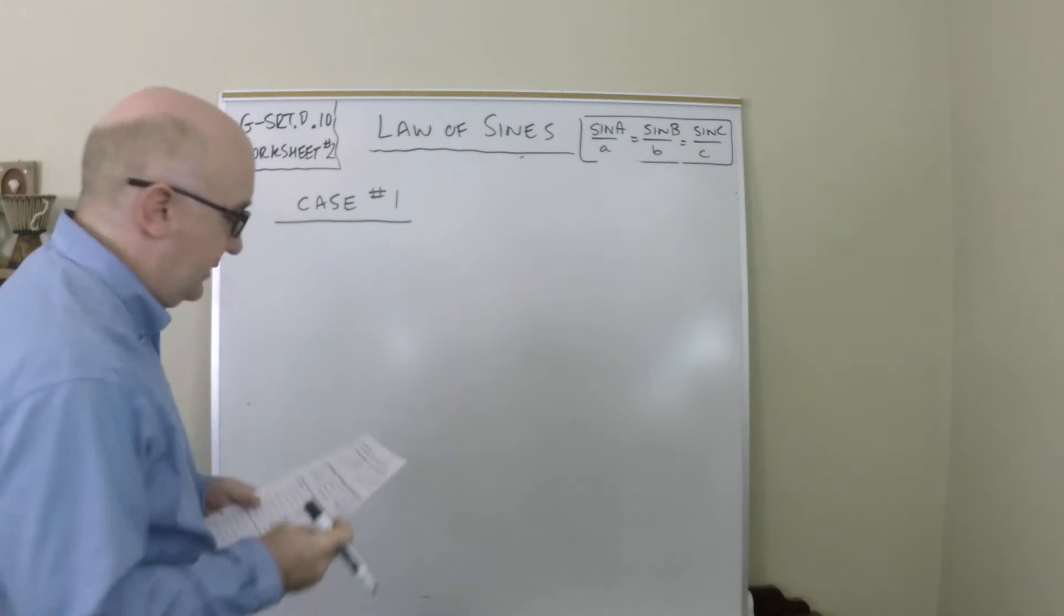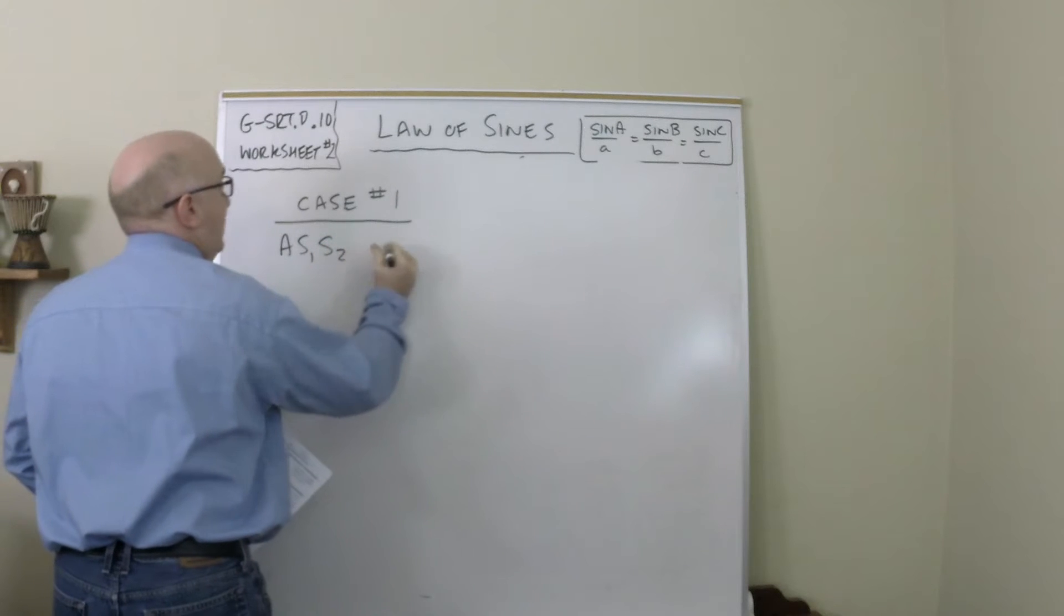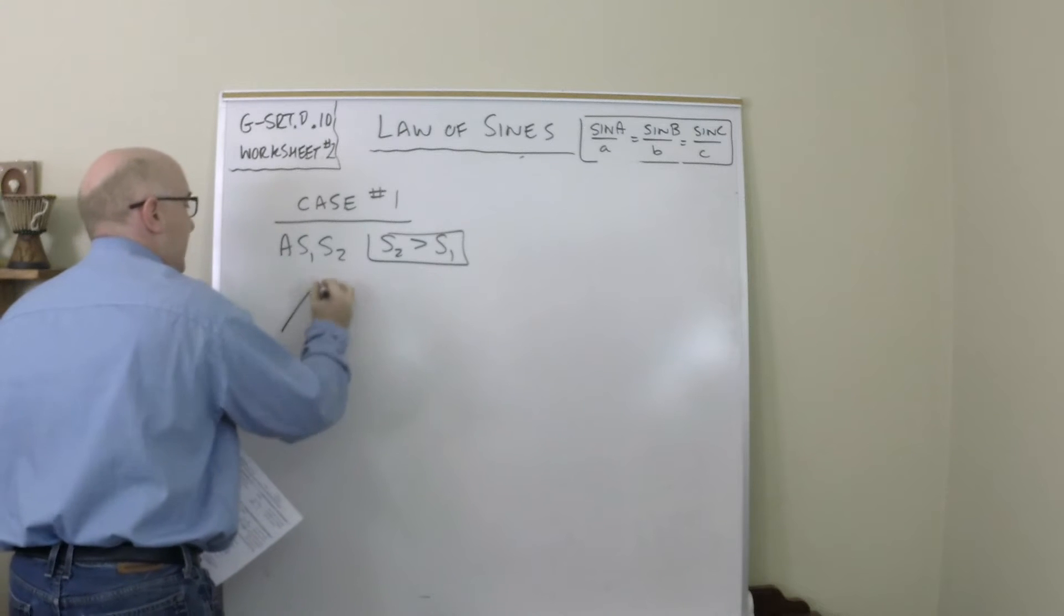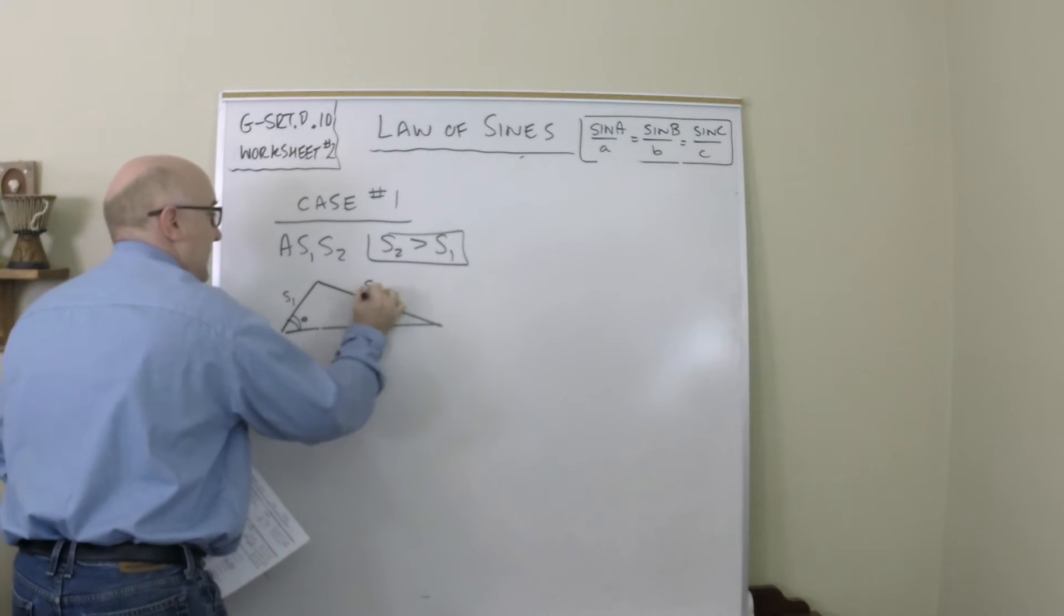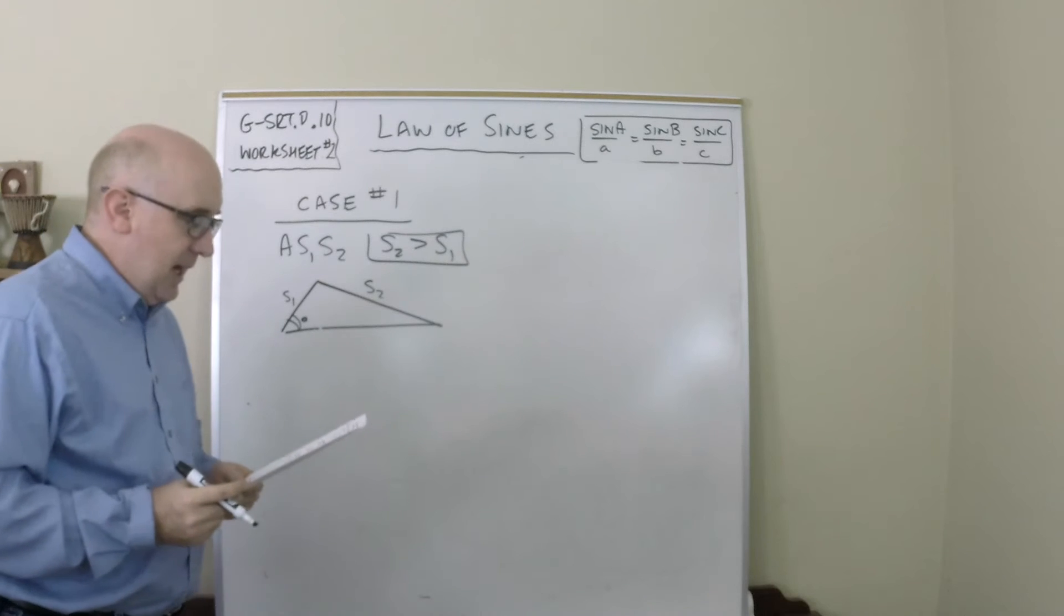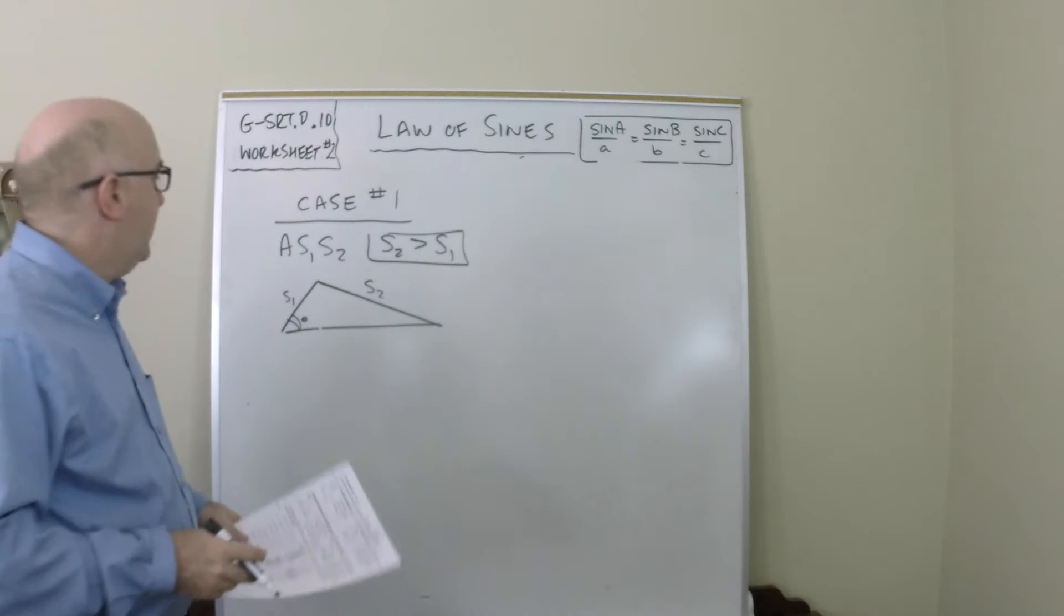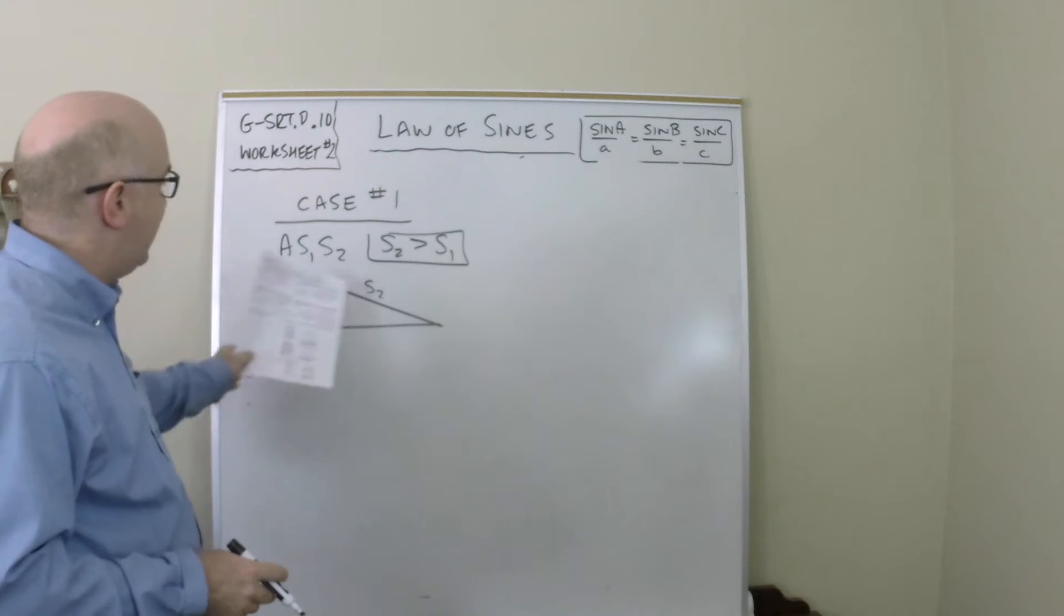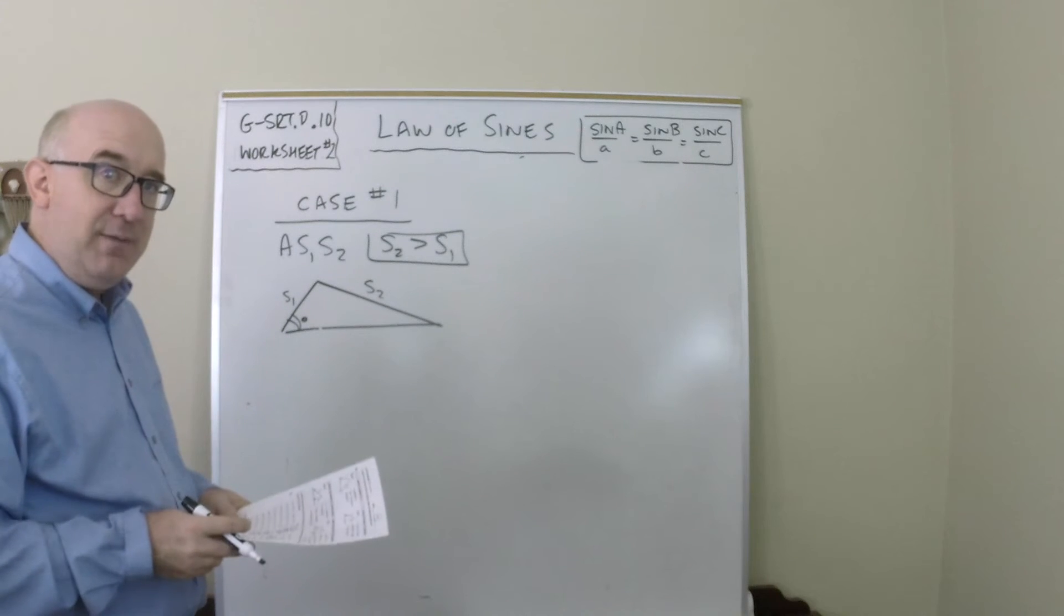Now the first case is when the angle side-side, where side 2 is greater than side 1. It would look something like this. So you'd have your angle, your side, and then your side. This case establishes a congruence. There is only one way to construct it when side 2 is larger than side 1. There's only one way for that to happen.